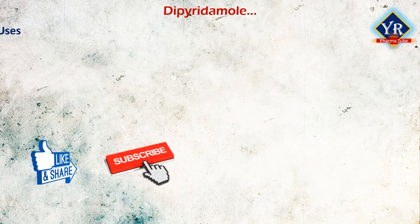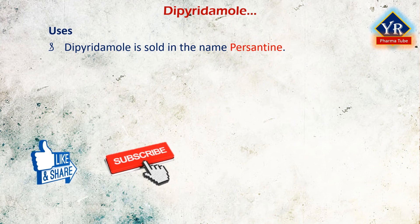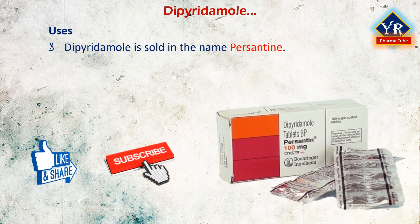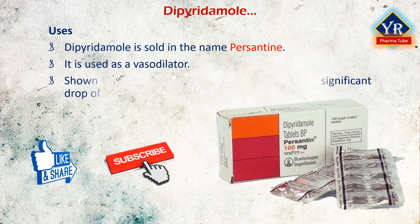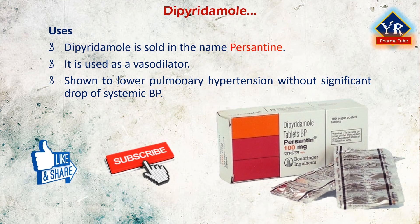Dipyridamol is stored under the name Persantine. It is used to dilate blood vessels in people with peripheral arterial disease and coronary artery disease. It has been shown to lower pulmonary hypertension without a significant drop in systemic blood pressure. It can be used for myocardial stress testing as an alternative to exercise-induced stress methods such as treadmills.